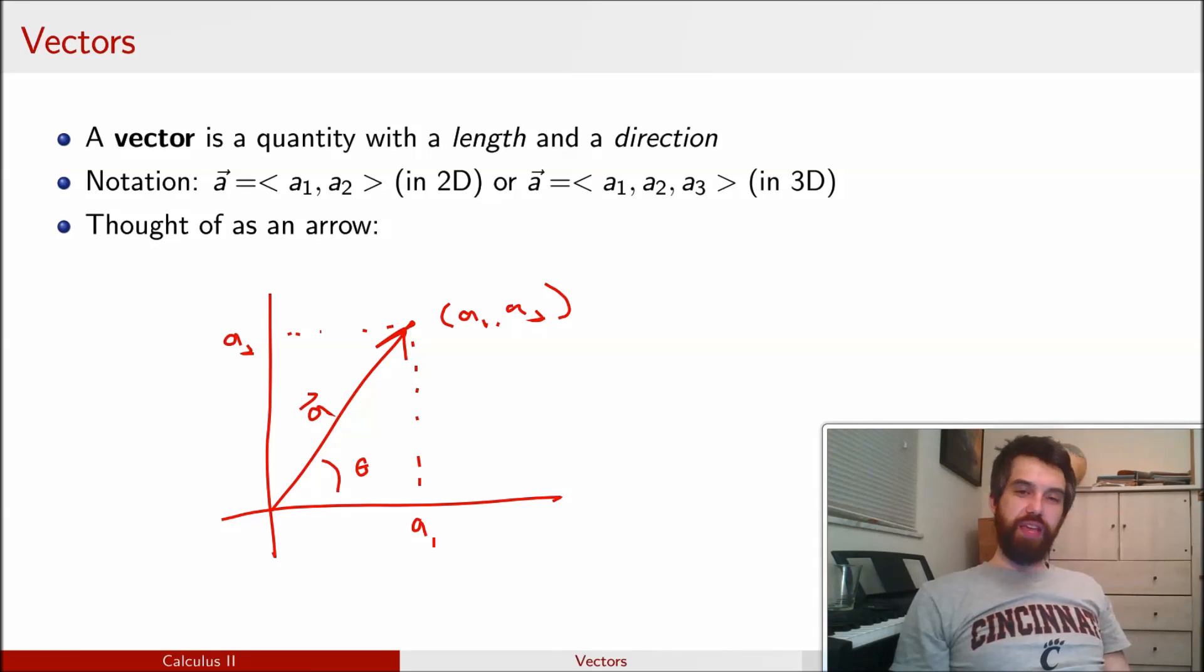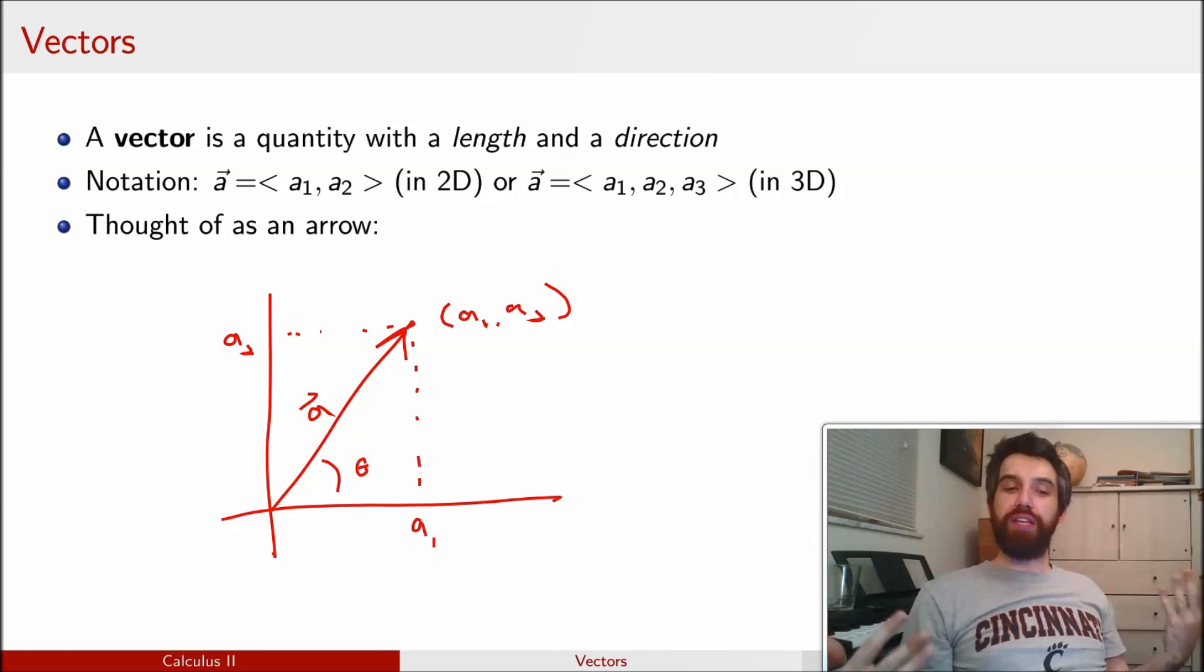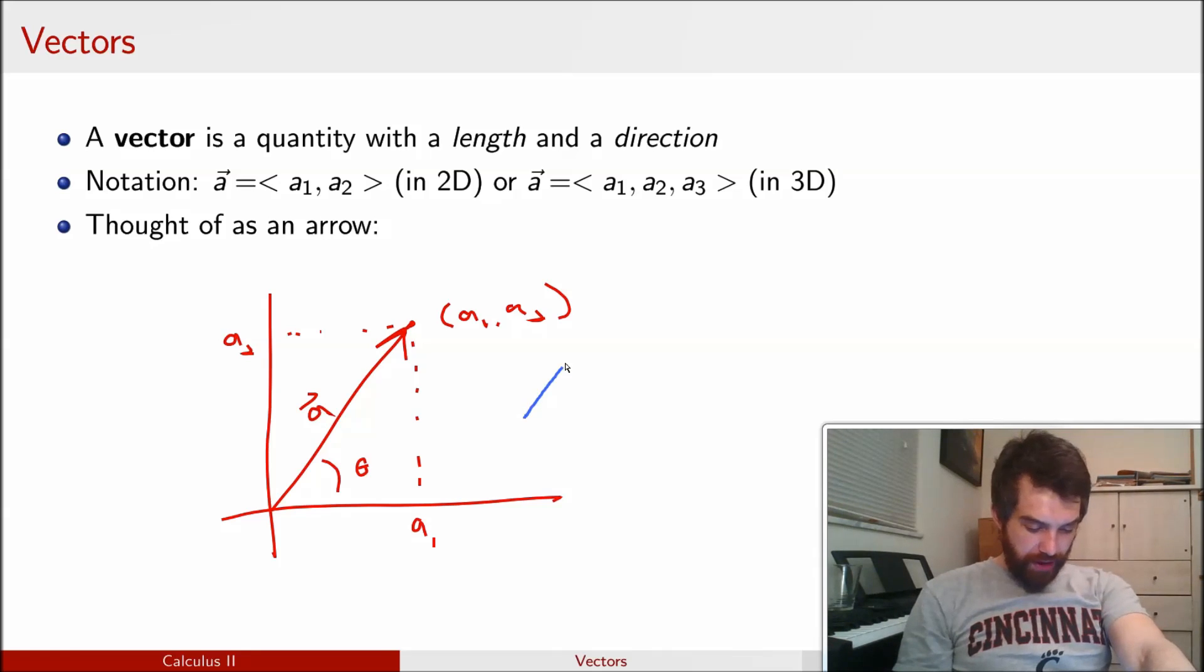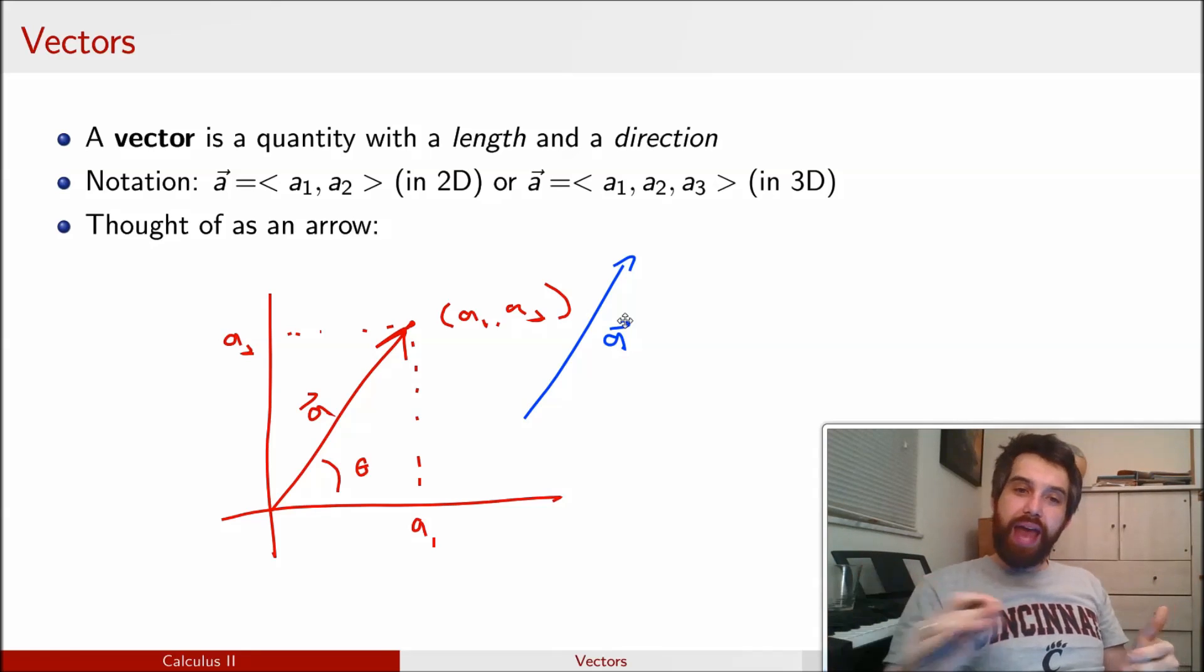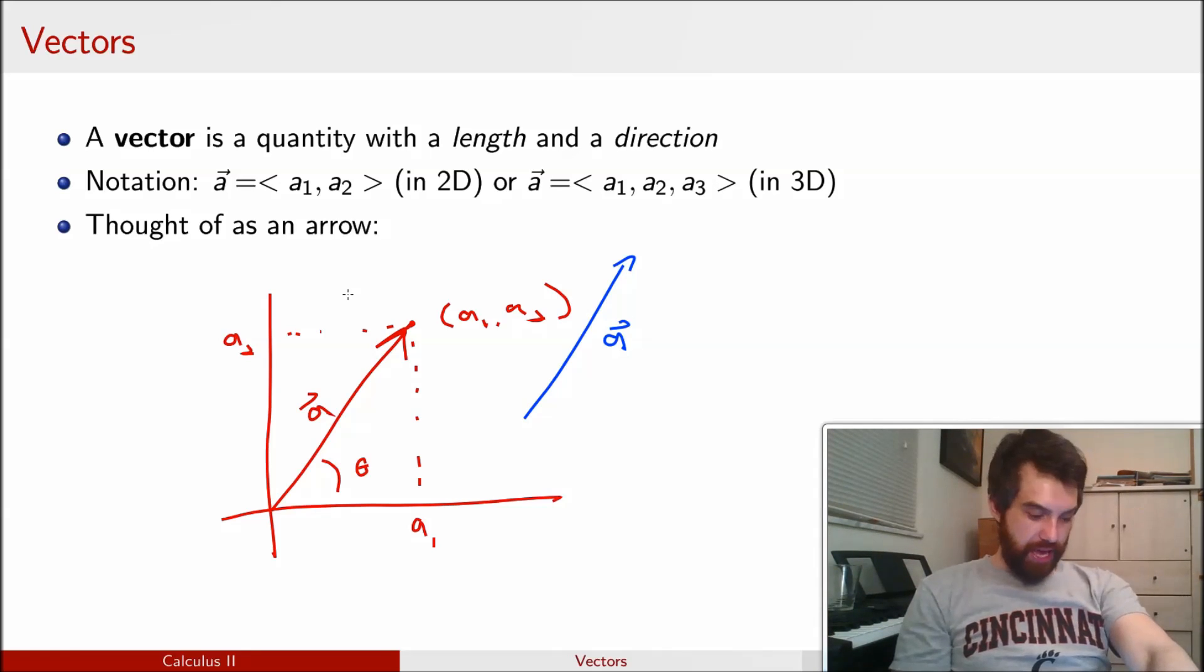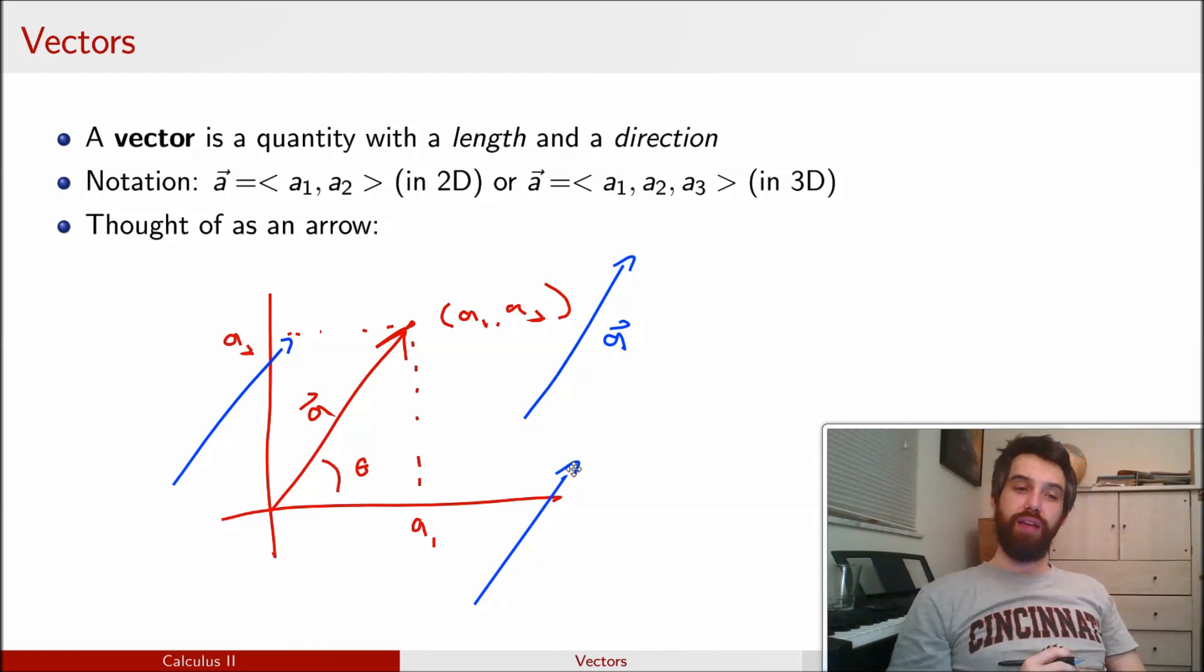Part of the magic of vectors, part of the interesting part about thinking about it as this thing that has both a length and a direction, is that the particular presentation I've shown here of starting at the origin and going out to the point a₁, a₂ is just one of many different ways to represent the same vector. For instance, consider this vector here. I'm going to call this also the vector a, and I say that because it has the same length and it has the same direction. Likewise, I'm going to say that this vector here is going in the same direction, has the same length. This vector over here is going in the same direction and the same length. So the canonical way to represent a vector is that it starts at the origin and goes out to a tip who has coordinates a₁, a₂, a₃. But you can slide it and translate it around as long as you don't change the direction or the magnitude.